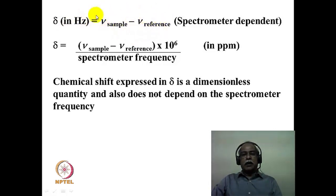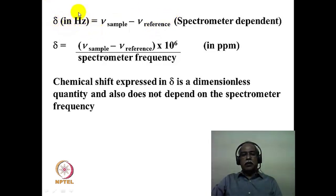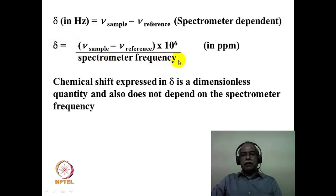Delta expressed in Hz is dependent on the NMR spectrometer because it is not normalized with respect to the spectrometer frequency. The sample frequency and reference frequencies are dependent on the B0 being applied, and different spectrometers have different B0 values. However, if you divide the difference between the sample frequency and the reference frequency by the spectrometer frequency, it becomes independent and dimensionless. The spectrometer frequency is generally of the order of megahertz (10^6 Hz), while the difference between sample and reference frequencies is of the order of hertz, introducing a factor of 10^6.